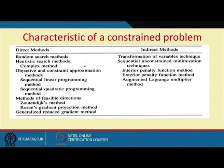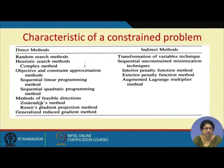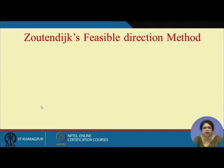Today I am dealing with the multivariable constraint optimization problem. I explained one methodology — the direct method — to solve the constraint non-linear programming problem. There are several methods available. Kelly's cutting plane method, which is the sequential linear programming method, we have already solved. Today I will tell you the method of feasible directions, that is the Zoutendijk method, to solve the constraint non-linear programming problem. Let me tell you the basic philosophy of this feasible direction method first.